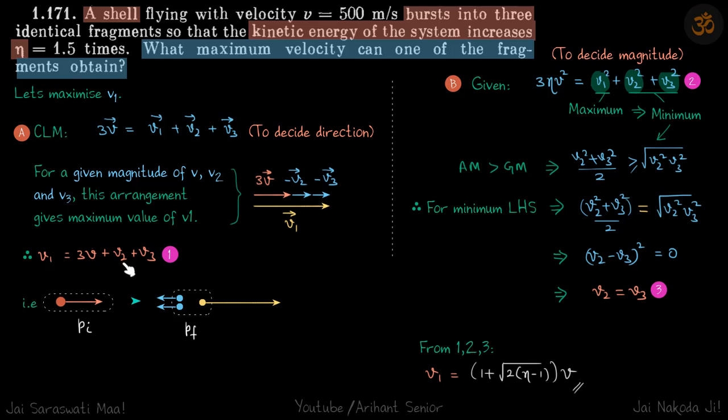And it will look like this: this is the system, this is initially the shell flying like this with some initial momentum, and finally it will burst apart into three identical fragments. So this is our fragment which will go in the forward direction.